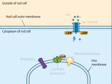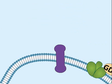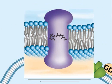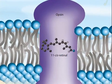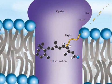Light sensitivity begins with the absorption of light by rhodopsin. Rhodopsin consists of a protein part called opsin and a light-absorbing part called 11-cis-retinal, which is cradled in the center of the opsin and bound covalently to it. When 11-cis-retinal absorbs a photon of light energy,